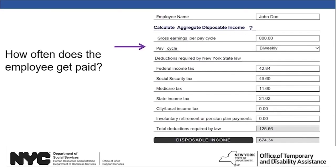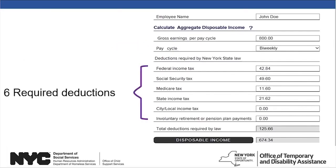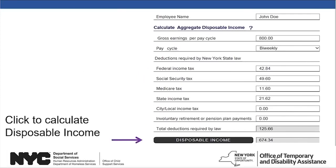Select how often the employee gets paid. Enter the amounts of the six deductions required by New York State law as applicable to the specific employee. Note that not every employee will pay city or local income tax and/or involuntary retirement or pension plan payments. The employee may have other deductions not listed, but those are not considered in this calculation for child support withholdings. Click on the Disposable Income button and the calculator will determine and display the disposable income — in this case, $674.34.